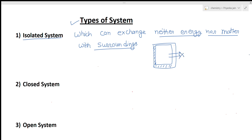Suppose we take a thermos of tea that you use while traveling. Its walls are insulated, so heat cannot go outside or inside and matter cannot go outside or inside. Such type of systems are called isolated systems.